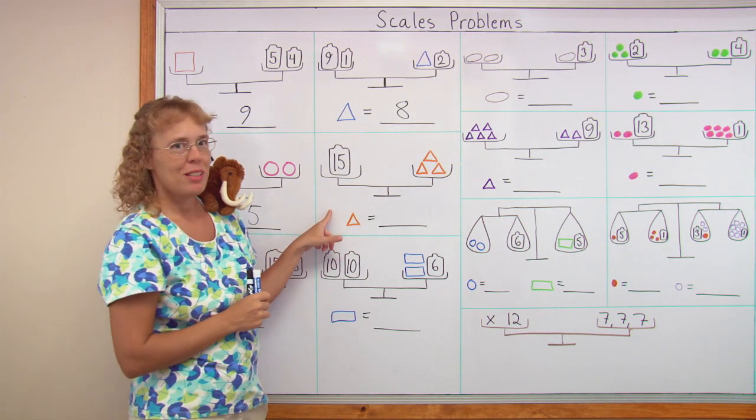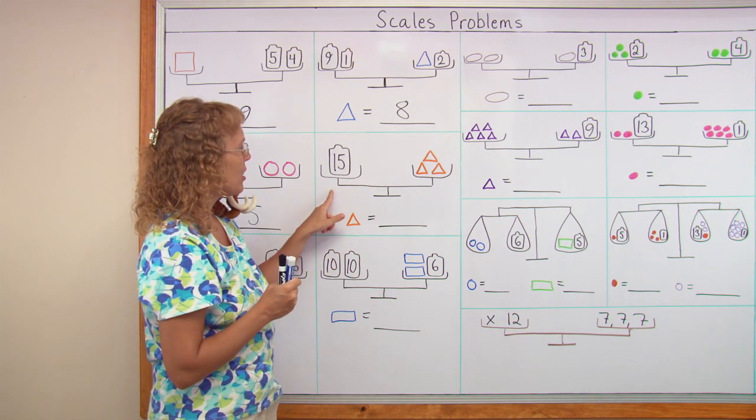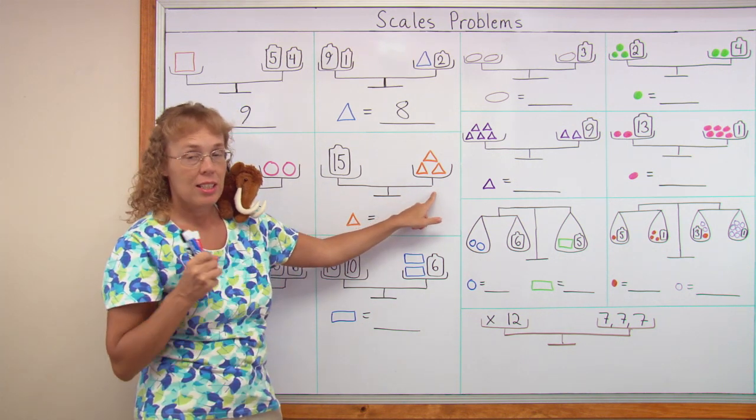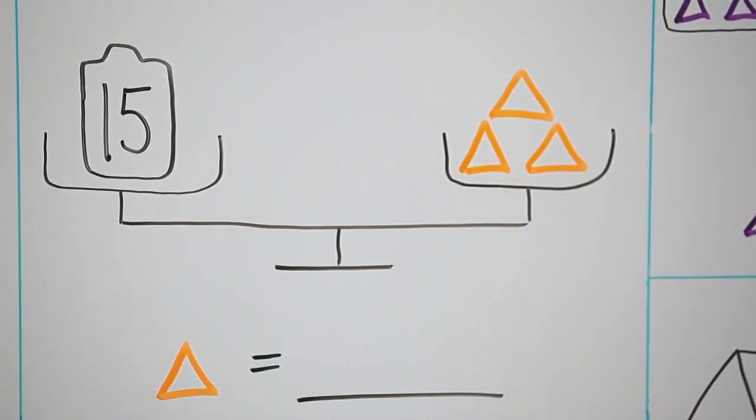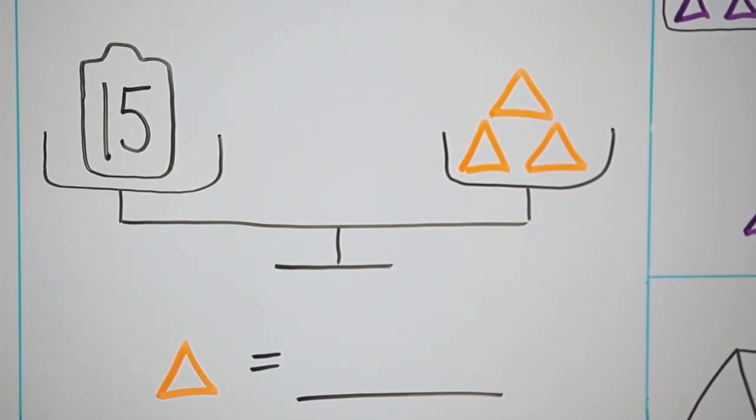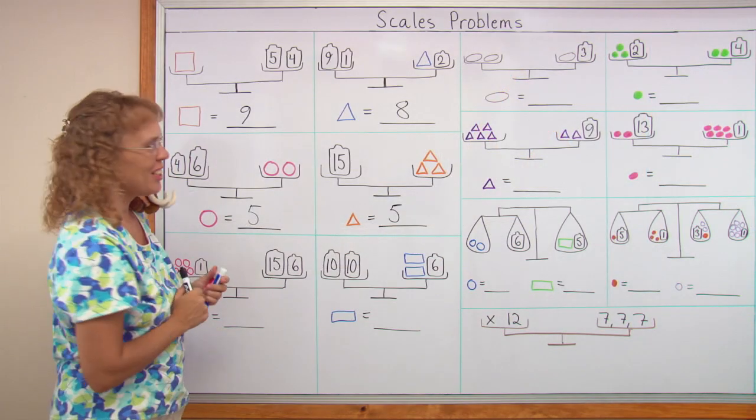Then this one, it's an easy one too. 15 on this side, so this side must also be 15. 3 of these is 15. So one of them, one triangle must be 5. This is really easy.